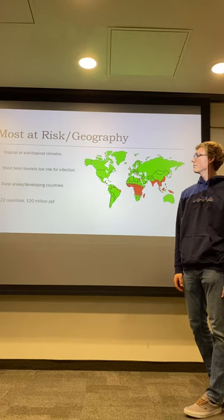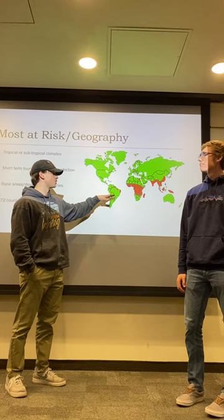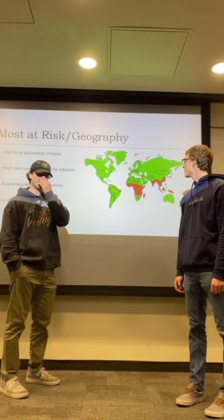Up next we have the geography and those areas that are most at risk. As you can see on this map, the highest risk areas are tropical to subtropical climates — places with a lot of rivers and water, where those mosquito species thrive.